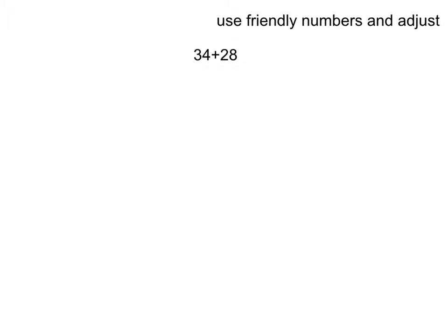Here I'm going to use friendly numbers and I'm going to adjust. 34 plus 28. Well, I know that 28 is pretty close to 30. Actually, it takes me two more to get to 30. Well, if I have 34 plus 30, I know, let's see, 34, 44, 54, 64. So if I have 64,